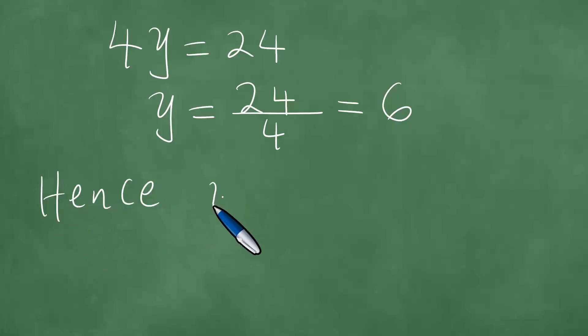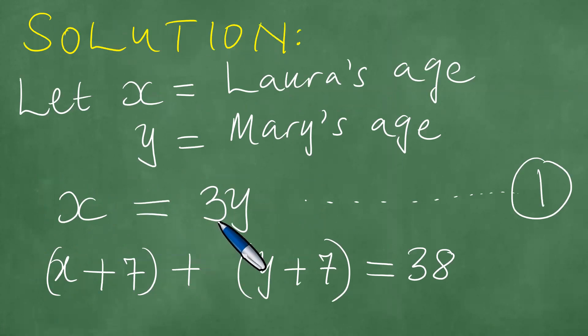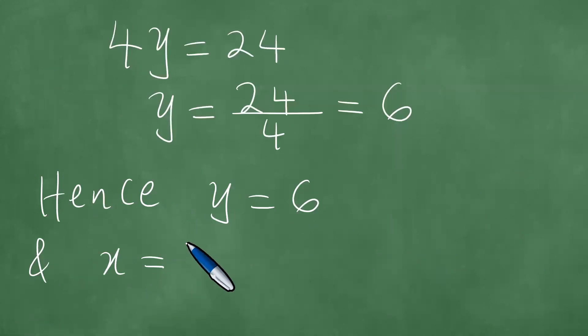Hence, y equals 6, and x, we remember x, right? x is 3y. x equals 3y in the first equation. So now we remember this, and we put 3y, which is 18 like this.